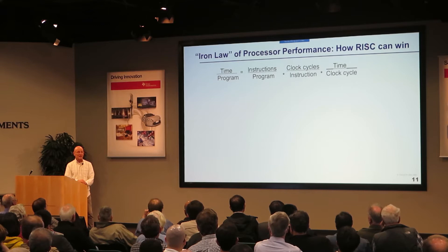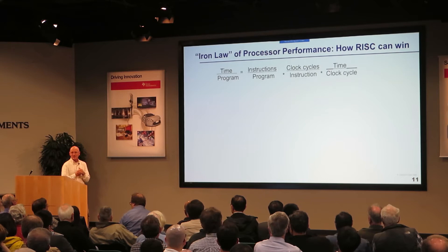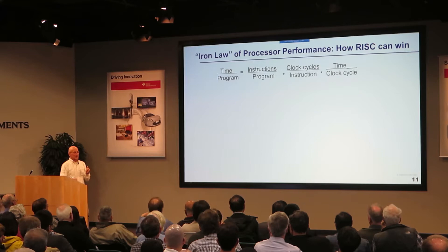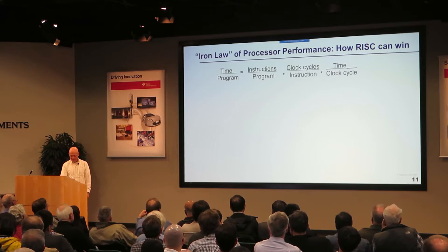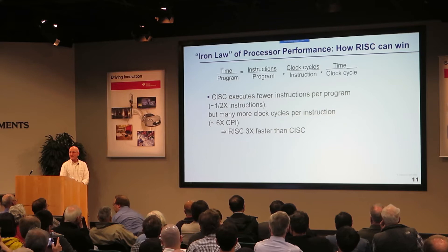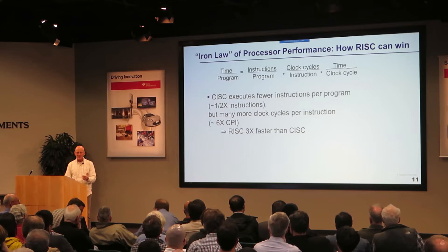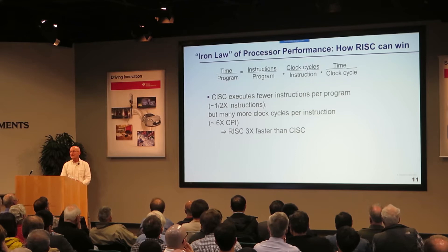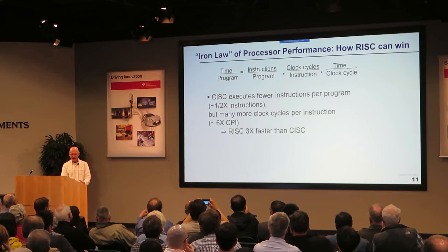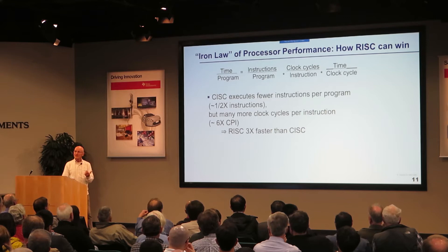A study from the DEC engineers found that CISC instructions did execute fewer instructions — about half as many — but the average number of clock cycles was six times as many. So when you multiply those two factors, RISC was about three times as good as the VAX architecture. Once we had that scientific explanation — that with the microcoded interpreter the clock cycles go up even though you execute fewer instructions — people got it. Then the question was: would it be successful in the marketplace?